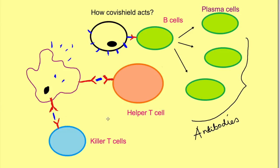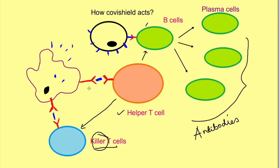The antigen presenting cell also presents this antigen to killer T cells. So there is presentation of the antigen to helper T cells, B cells, and killer T cells. As the name suggests, killer T cells can actually kill infected cells. The helper T cells, which have activated the B cells, also activate the killer T cells by releasing certain chemicals known as cytokines.